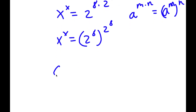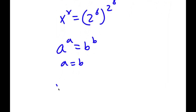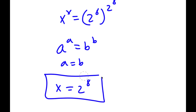Now, if I have something in the form a to the power of a equals b to the power of b, this means a equals b. So in this case, x is equal to 2 to the power of 8. This is my answer to this problem.